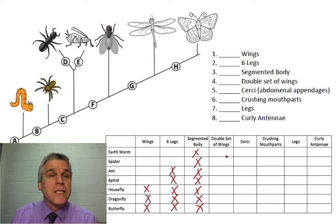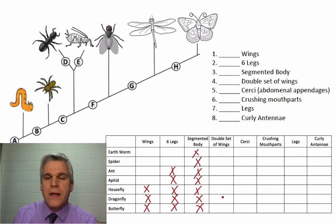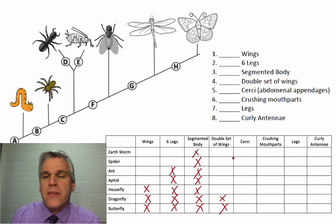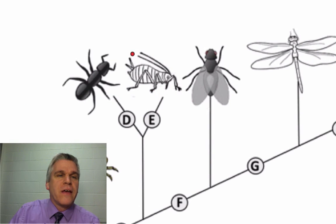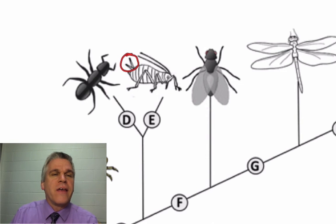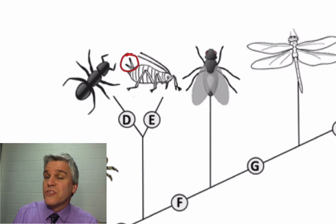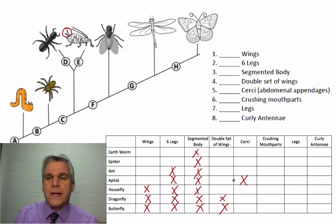Next is a double set of wings. We can see that the dragonfly has a double set of wings, and the butterfly has a double set of wings. The next are called circe — these are abdominal appendages. If you take a look at the aphid, you'll see on the end of its abdomen there is some branching. Those are circe, and they're the only ones that have that. I'm going to put an X there.